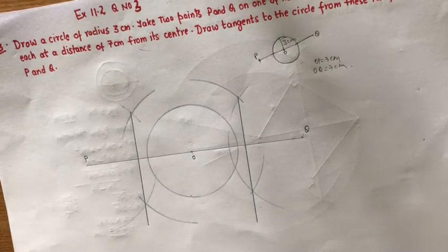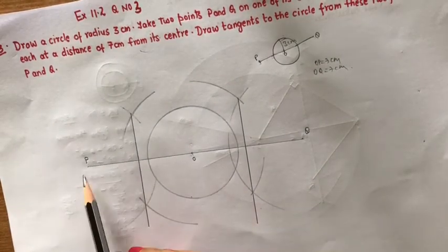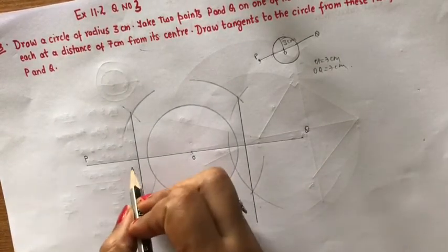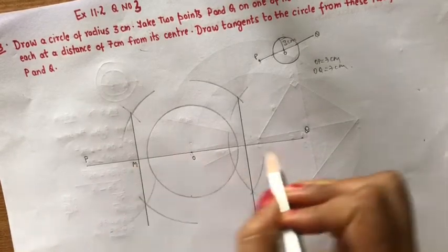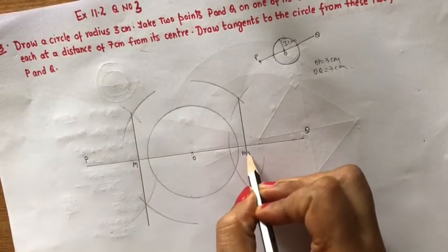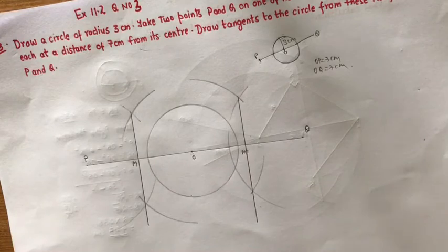Now we have got the midpoints of OP and OQ. I call them as M and M dash respectively, right? So next step.